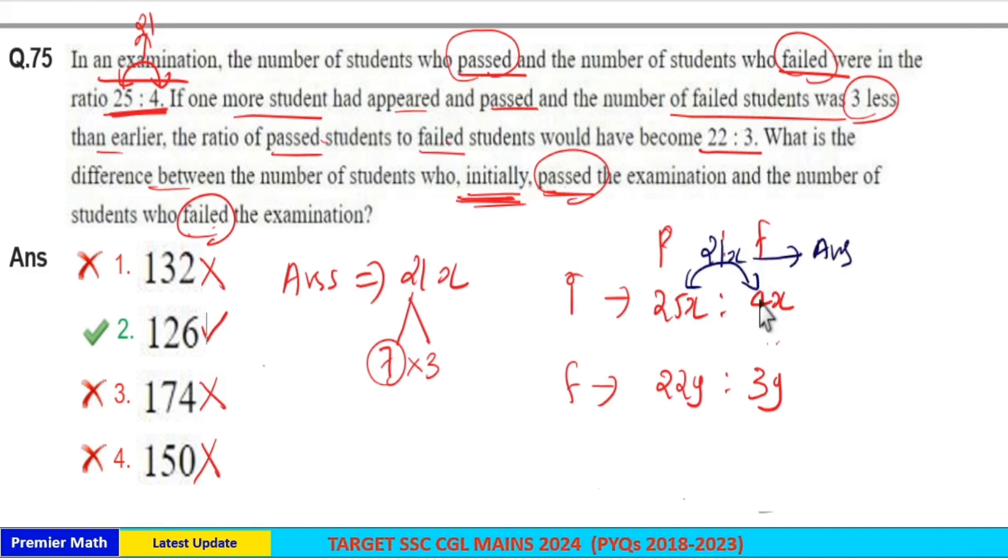You can also form equations. When one more student appeared, the number of failed students was 3 less than earlier, which means the difference between initial and final failed students is 3. That is 4x minus 3y equals 3. Same way, the difference between passed students initially and finally means one more student appeared and passed.